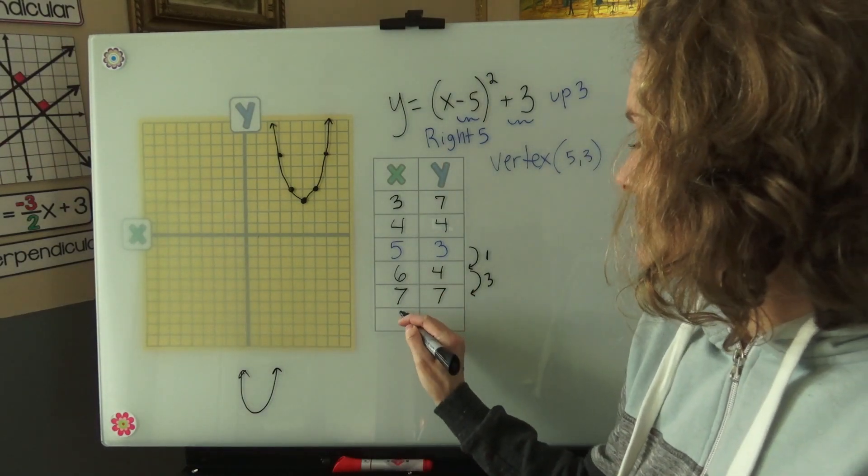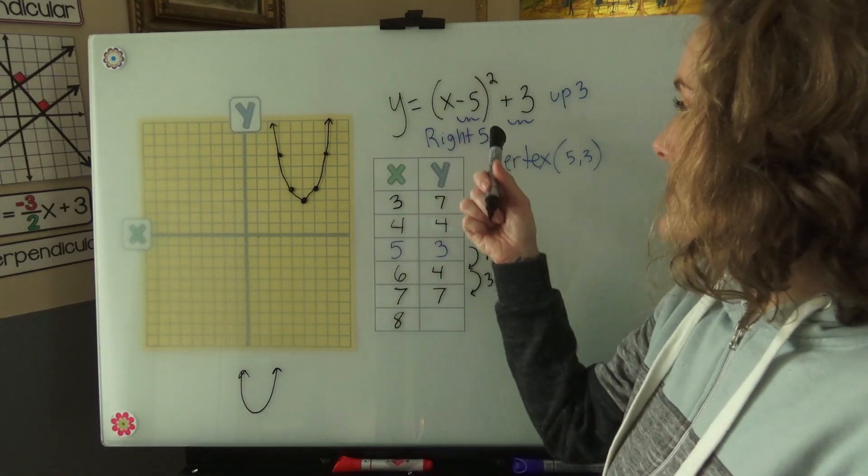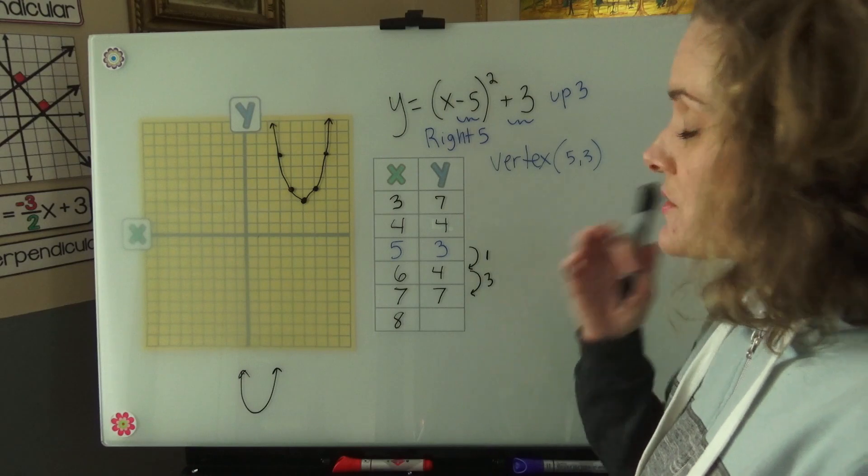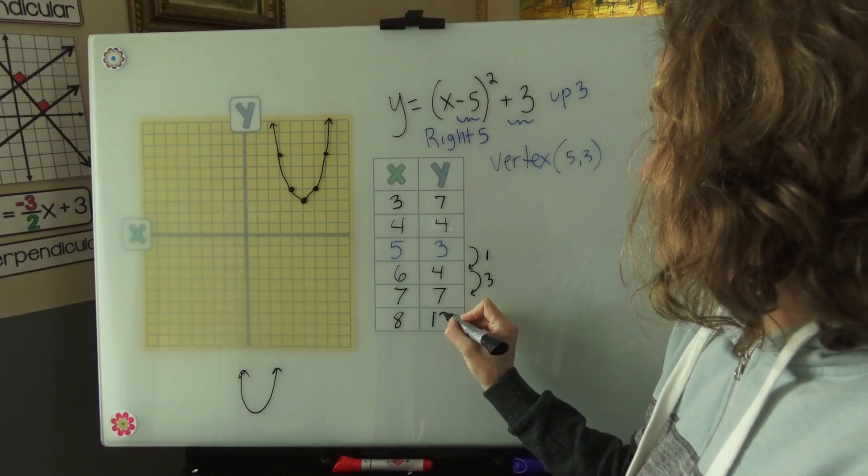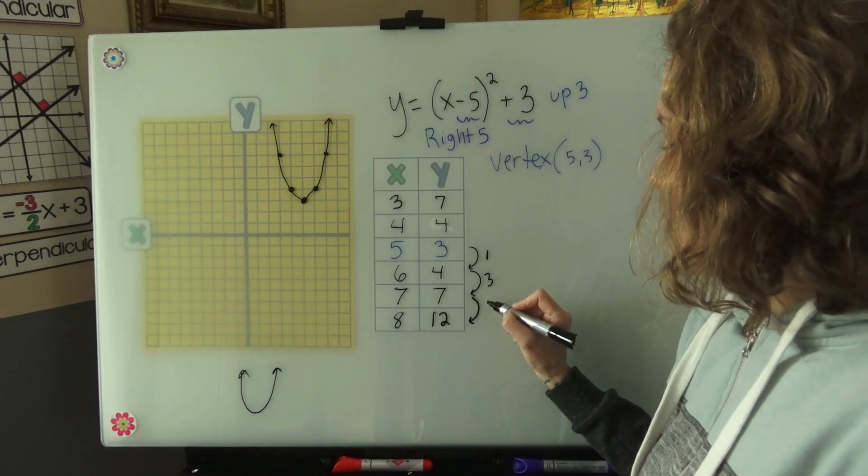So 6, 7, 8. 8 minus 5 is 3. 3 squared is 9. 9 plus 3 is 12. 7 to 12 is 5.